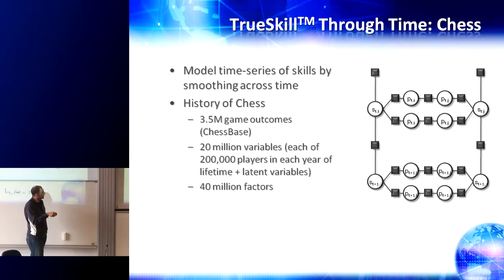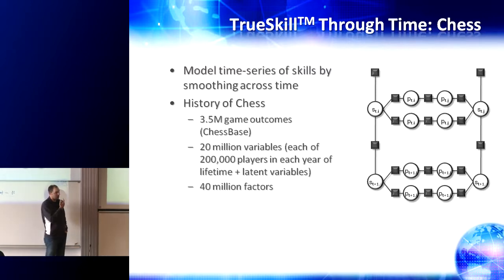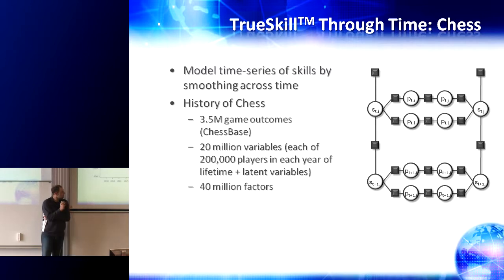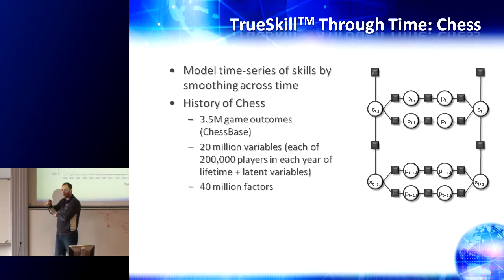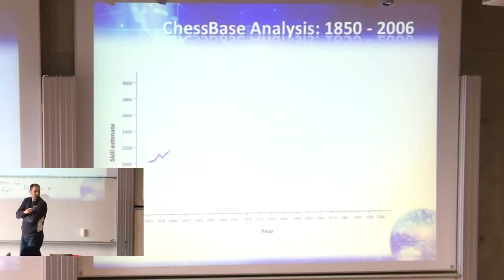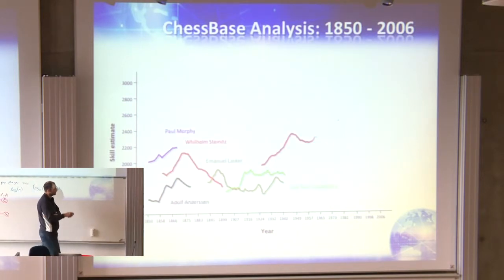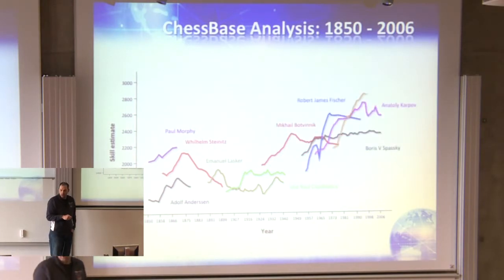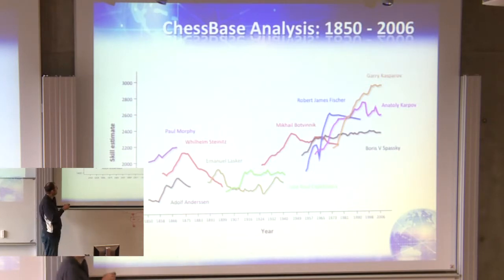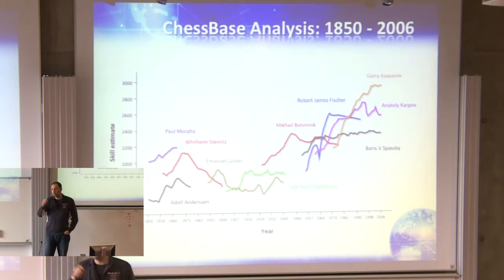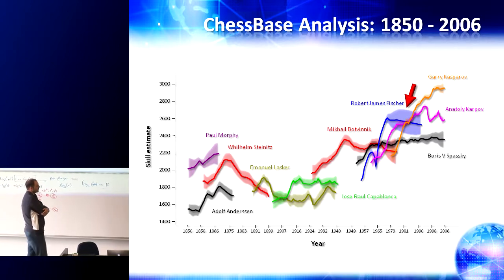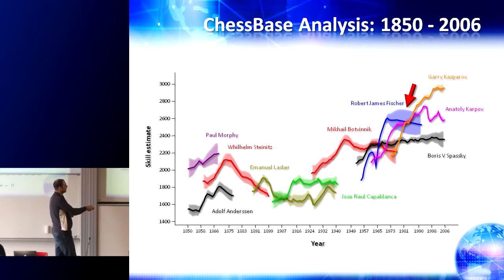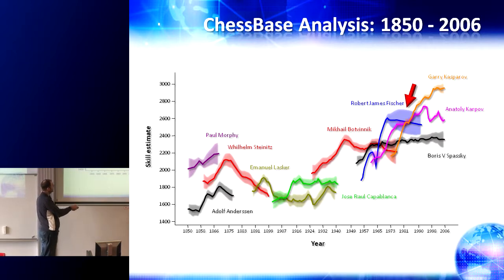What you get is the ability to take the best players from every year of modern chess and compare them. You can see their lifetime skill profiles with means and uncertainty bands (±1 standard deviation). One interesting observation: the uncertainty is almost always wider at the start and end of a player's career than in the middle. The reason: a player in the middle of their career has two time-step factors constraining their skill (one from the previous year, one from the next), while players in their first or last active year only have one—fewer constraints means wider uncertainty. There's also a big bulge for Bobby Fischer, because he stopped playing after 1971 and only returned in 1991.